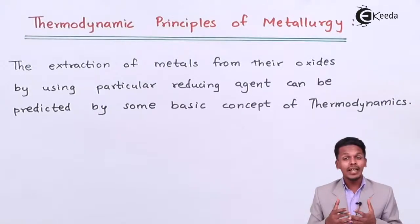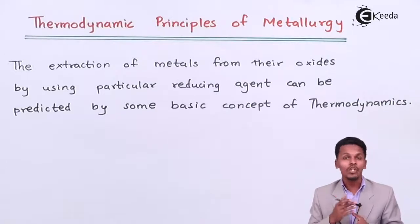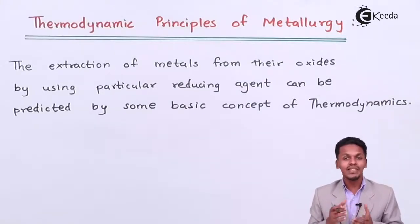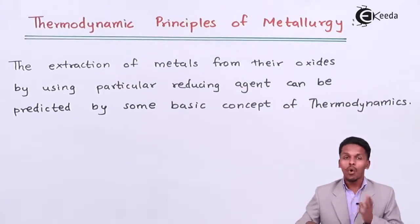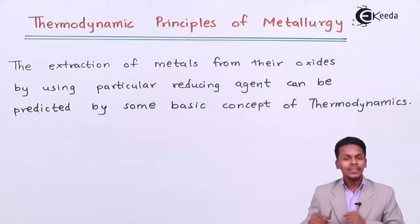In thermodynamics, we have understood that the spontaneity of a reaction can be predicted by the delta G value. If the delta G value is positive, those reactions are considered to be non-spontaneous. If delta G value is negative, the reaction is considered to be spontaneous, and when delta G is zero, the reaction is in equilibrium. Based on this concept, we can decide what temperature or conditions a particular metal oxide needs so as to get reduced into a pure metal.